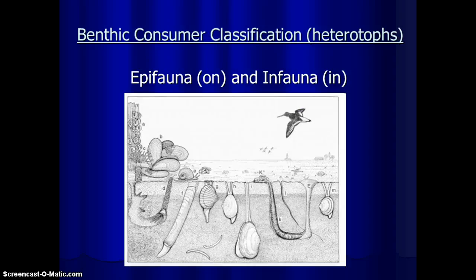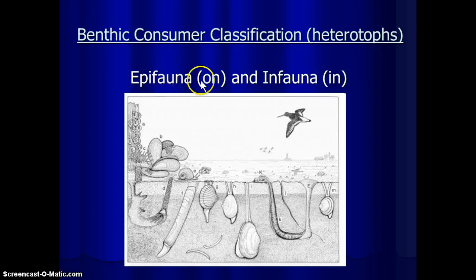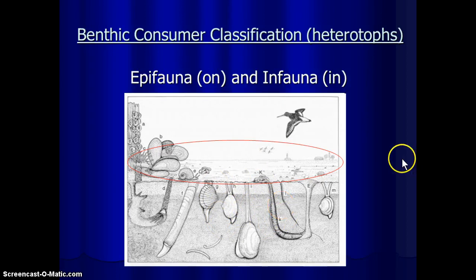The other way we can classify the benthos is whether or not organisms live on or in the seafloor. If they are epi — that's on top of — fauna, so organisms on top of or on the seafloor, they are epifauna. And if they live in or below the seafloor, inside the sediments, then they're called infauna. That's simple enough.